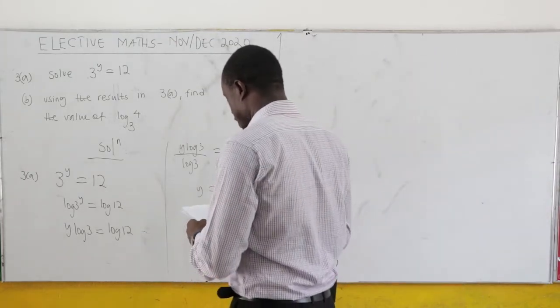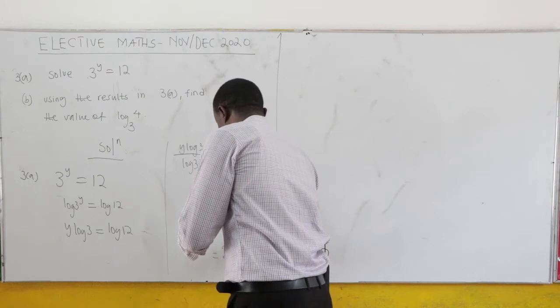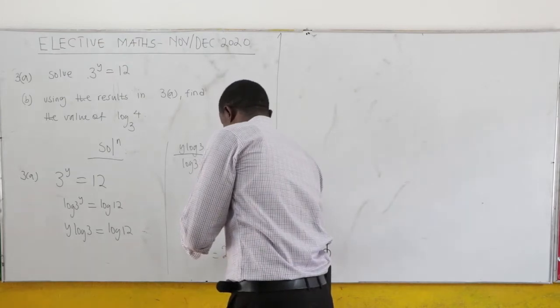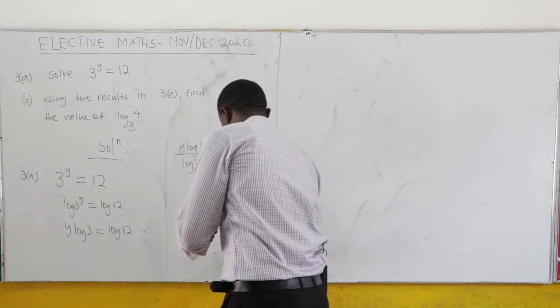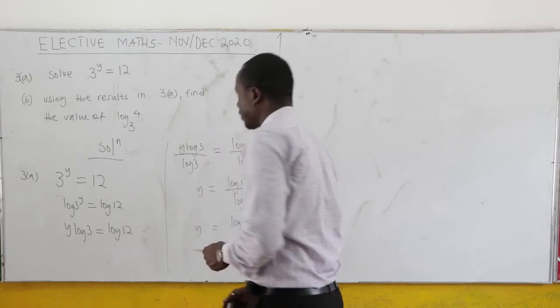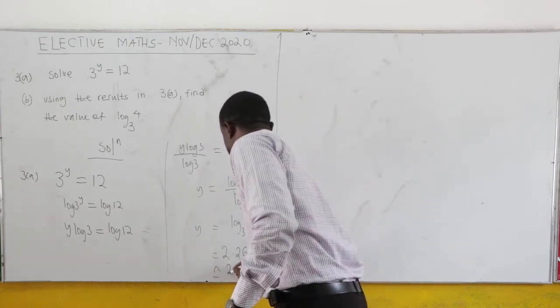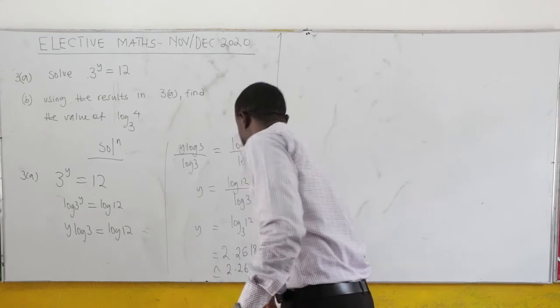And when you punch this on the calculator, this is given as 2.261859507. Now approximately, you can say this is 2.262.